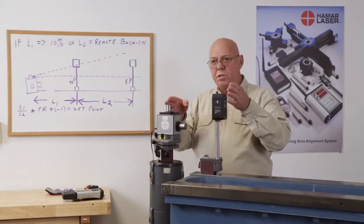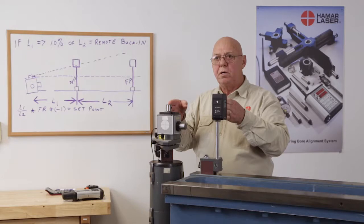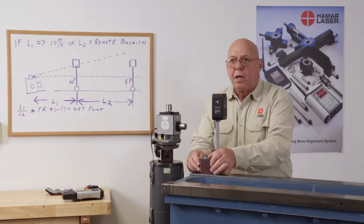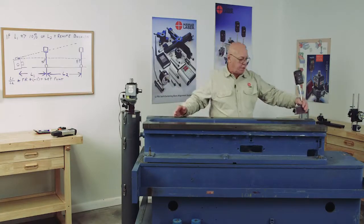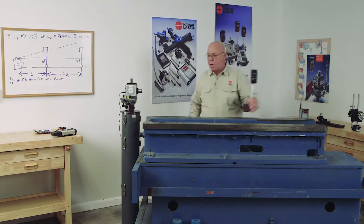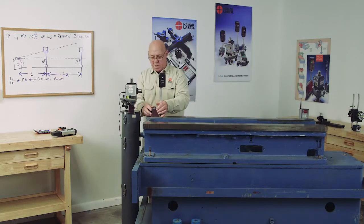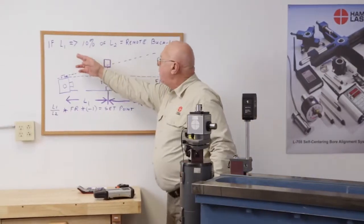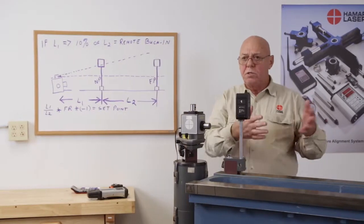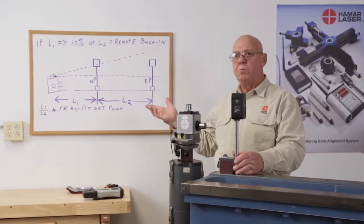If I measure the distance from this laser beam to this target, and I call this L1, and I take the target down here and I measure the distance from the near point to the far point, and call that L2, then we do the math. If L1 is 10% or greater of L2, then I'm going to use this remote formula.